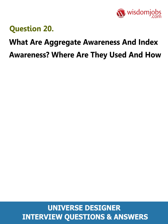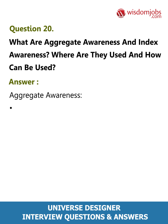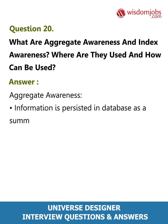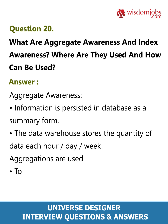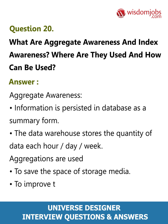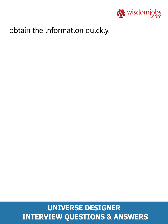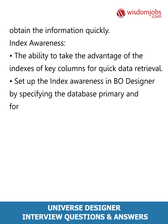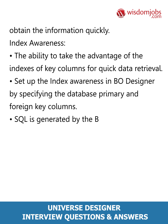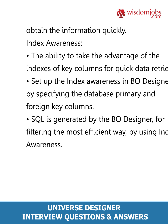Question 20: What are aggregate awareness and index awareness, and how are they used? Answer: Aggregate awareness — information is persisted in the database in summary form. The data warehouse stores quantities of data each hour, per day, per week. Aggregations are used to save storage space and improve performance, so BO tool queries take less time to process and users obtain information quickly. Index awareness is the ability to take advantage of indexes on key columns for quick data retrieval. Set up index awareness in BO Designer by specifying the database primary and foreign key columns. SQL is generated by BO Designer for filtering in the most efficient way using index awareness.